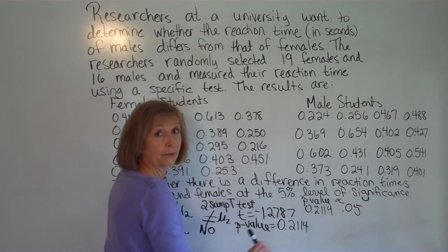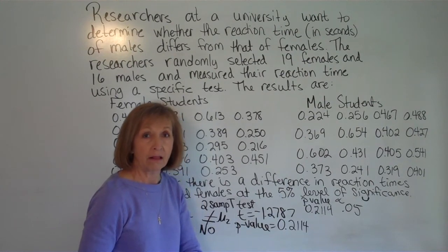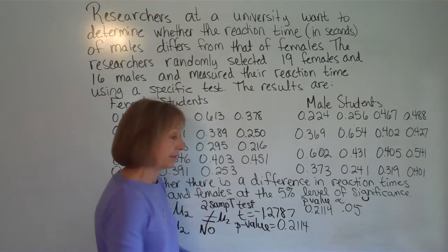And this p value, remember if the p is low the null must go. So when p value is smaller than alpha is when you reject the null. If the p value is bigger than alpha you cannot reject the null.